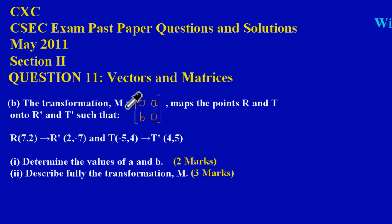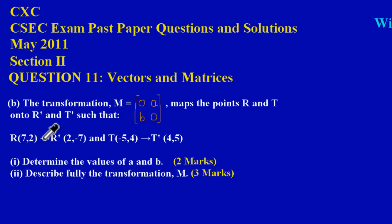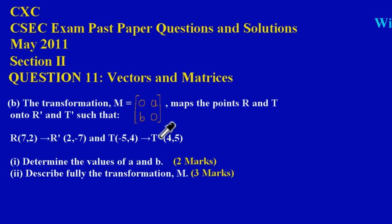In part B, the transformation M equals [0, a; B, 0] maps points R and T onto their corresponding image points R prime and T prime. The object point R is (7, 2) mapping onto image point R prime (2, -7), and object point T (-5, 4) is mapping onto T prime (4, 5).